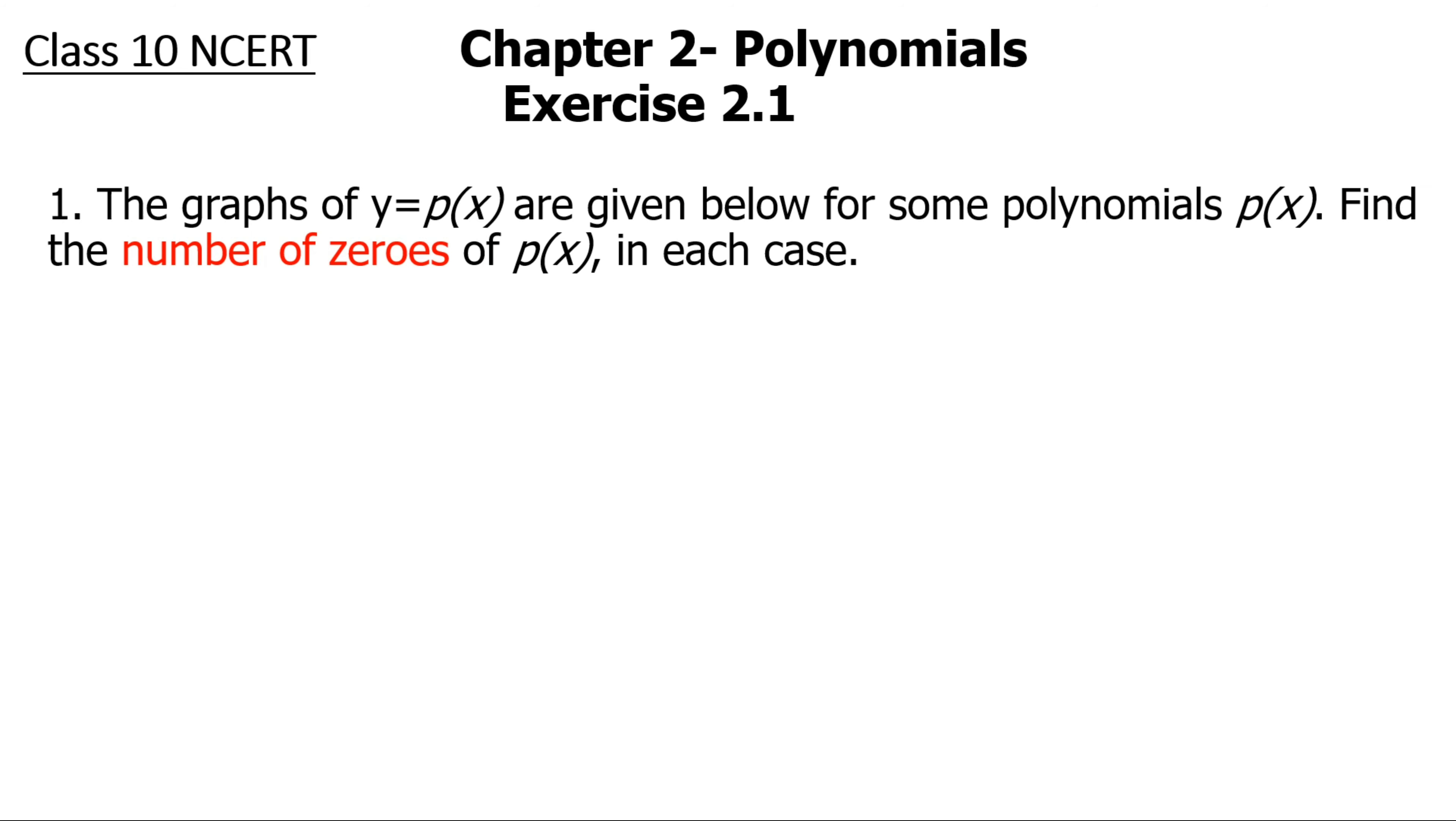So before we actually start working on the problem, let's see how to find the zeros. Let's say this is my graph and this is my x-axis and y-axis. Now where the graph intersects or touches the x-axis, those points will be the zeros of the given function. For example, say the graph is something like this, goes down, up and again moves down, something like this.